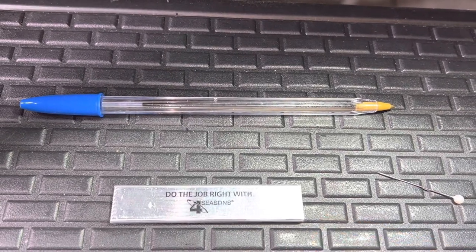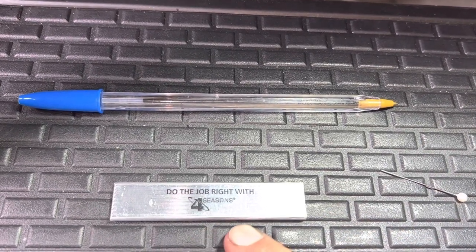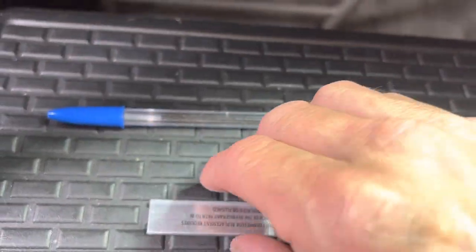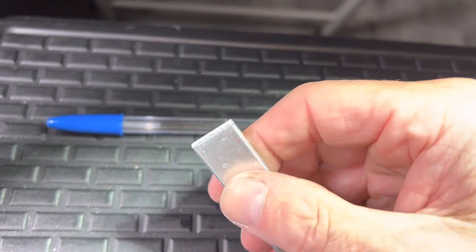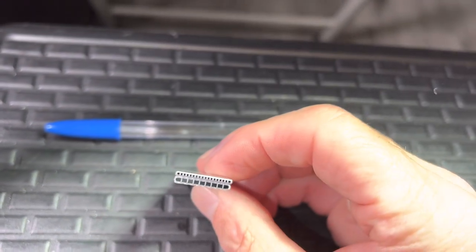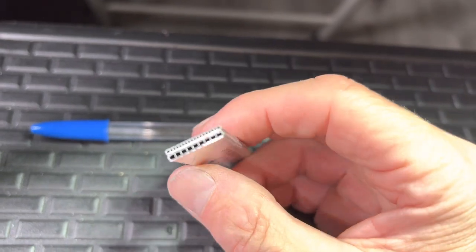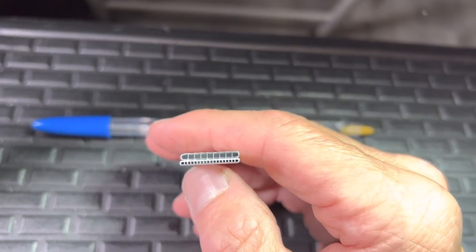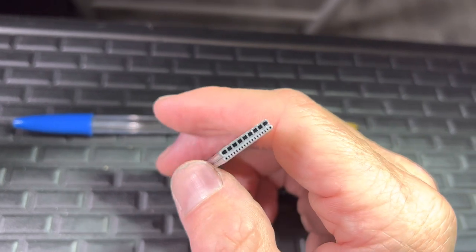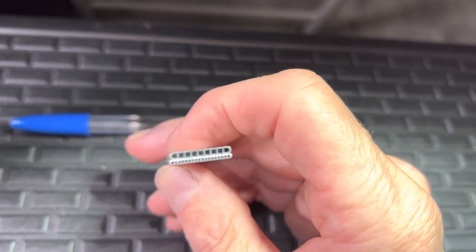AC condenser tubing. This was a product example from Four Seasons when I was at the MACS annual convention expo. You see two different tubes here. The one at the top usually represents a cheaper manufacturer. It could even be worse than this. This is not even that bad.